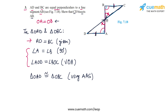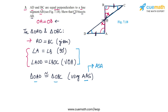AAS is equivalent to ASA because if two angle pairs are equal, the third angle pair is automatically equal — angle D will also equal angle C due to the angle sum property. So triangle OAD is congruent to triangle OBC using the AAS congruence criterion.